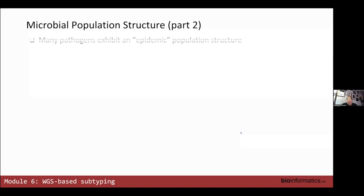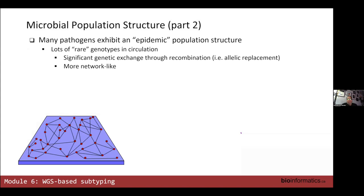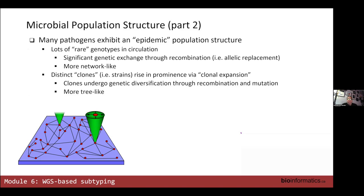Pathogens exhibit an epidemic structure described by Maynard Smith, where there are many rare subtypes in rare circulation that freely exchange genetic material through recombination. At the same time, there are distinct clones or strains that sort of take off and exhibit more tree-like evolutionary descent.